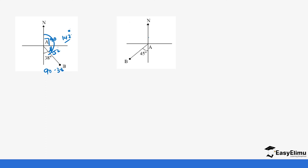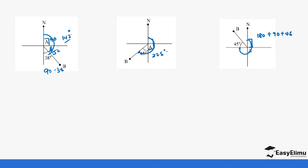For the next example: 90 plus 90 is 180, plus 45 gives 225 degrees. So this angle going clockwise is 225 degrees. For the following example: 180 plus 90 plus 45 — adding each 90-degree quadrant plus the remaining 45 — gives us 315 degrees. So the bearing is 315 degrees.